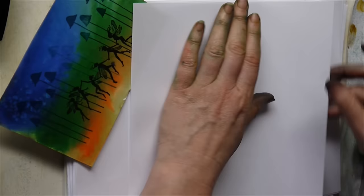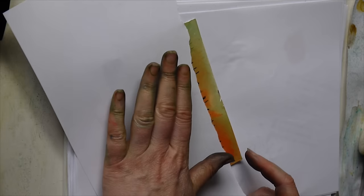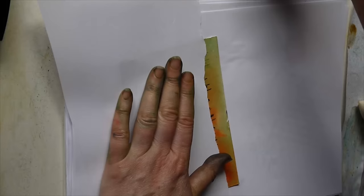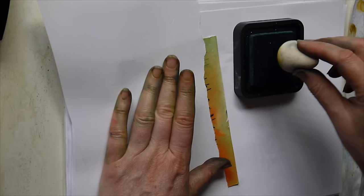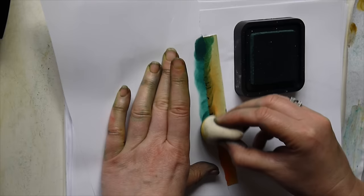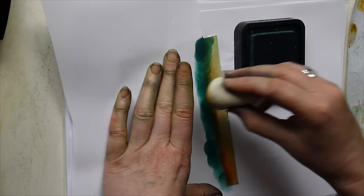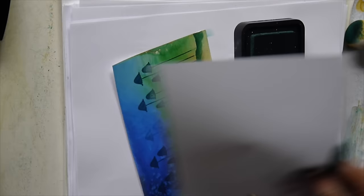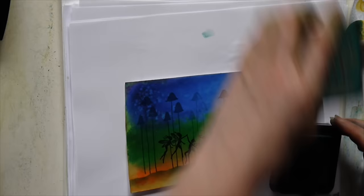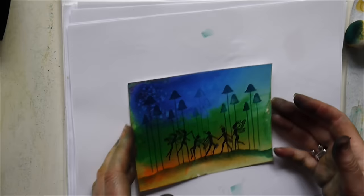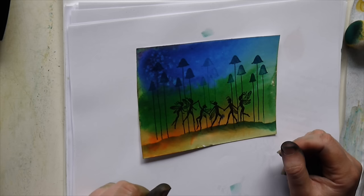Okay so we want to ground the fairies now. Using a torn piece of paper, simply place that down at the base of the mushrooms. And then we'll use our distress inks. This one's Pine Needles. I'm going to use my little blending tool and I'm just going to take that over the edge there. Like so. But you can see how the Brusho lends itself really well to the backgrounds. It just looks so magical.